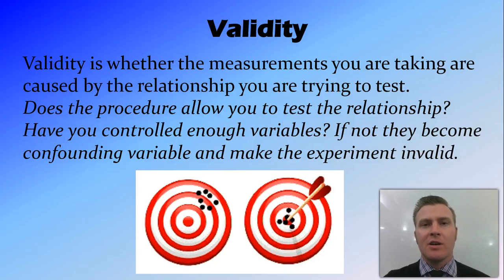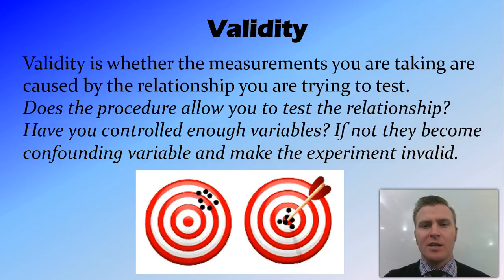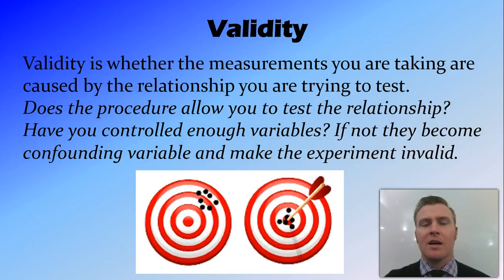Validity is whether you're measuring the thing that you set out to measure, or the value that you're trying to test. You need to ask whether the procedure you're using allows you to test the relationship effectively, and whether you've controlled enough of the variables so that they don't become confounding variables. Confounding variables occur when you don't control a controlled variable and it affects your results.